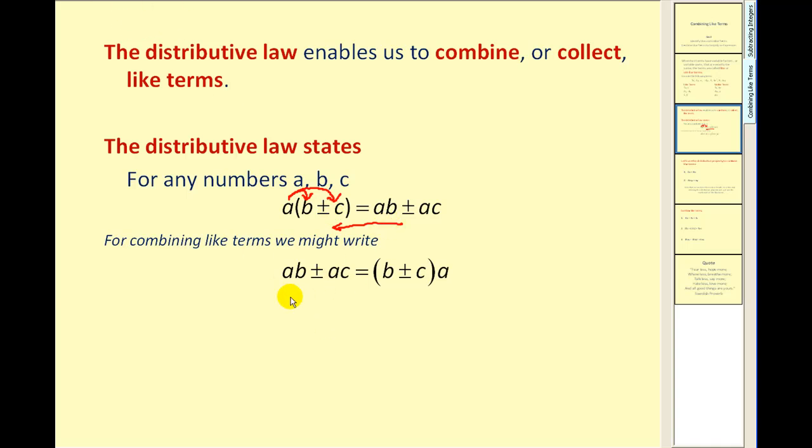We are going to start with the right side. ab ± ac. And notice how both of these terms have an a in them. So we are allowed to factor out the a. And what's left after we factor out this a. Notice how we have b ± c.